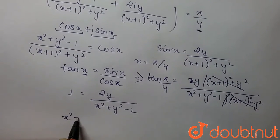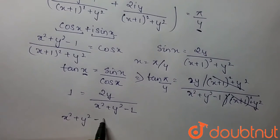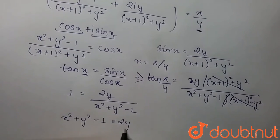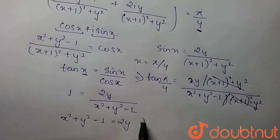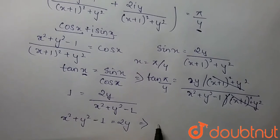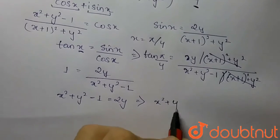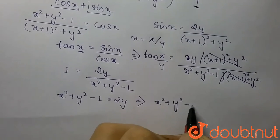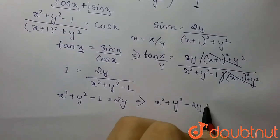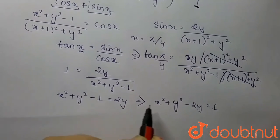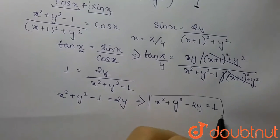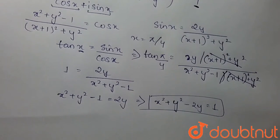Cross multiplying, we get x² + y² - 1 = 2y, which gives us x² + y² - 2y = 1. This is what we had to prove. Thank you.